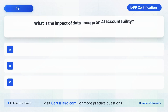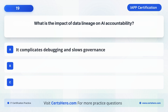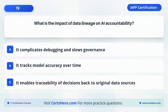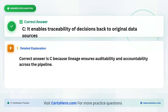What is the impact of data lineage on AI accountability? A. It complicates debugging and slows governance. B. It tracks model accuracy over time. C. It enables traceability of decisions back to original data sources. The correct answer is C: It enables traceability of decisions back to original data sources, because lineage ensures auditability and accountability across the pipeline.